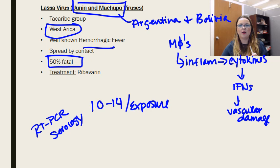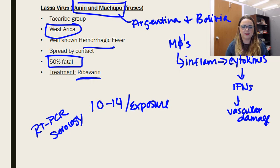This is actually one of the few where we can do something. Supportive care applies, but ribavirin has actually been shown to have some effectiveness against Lassa virus, which is great news. You also want to limit exposure prevention — limit contact with rodent vectors and handle samples from patients very carefully.